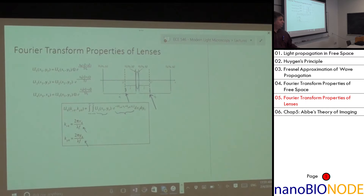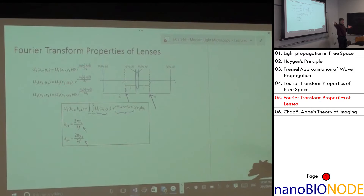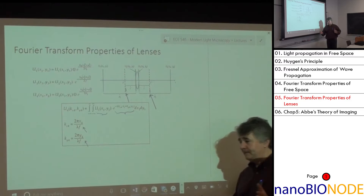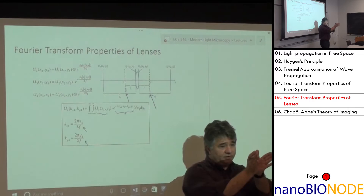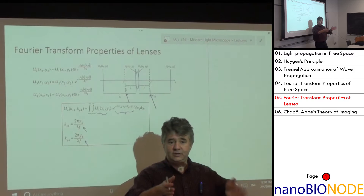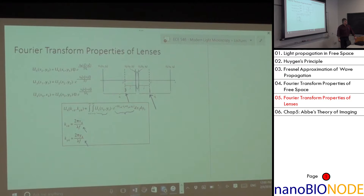The lens performs a Fourier transform on a very confined space — from f to f — without needing to go a kilometer away as in free-space Fraunhofer diffraction. I can do Fourier transforms at the speed of light. I can put any aperture or transparency at the input focal plane and see its Fourier transform at the output focal plane.